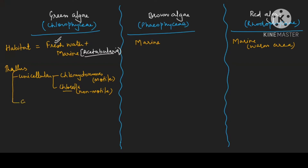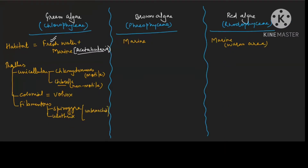Then colonial form — Volvox is a colonial form and is a diagram-based question. Then filamentous form: Spirogyra and Ulothrix are NCERT examples of unbranched filamentous green algae. Another example with branched filament is Chara, which is given in the 12th class book.